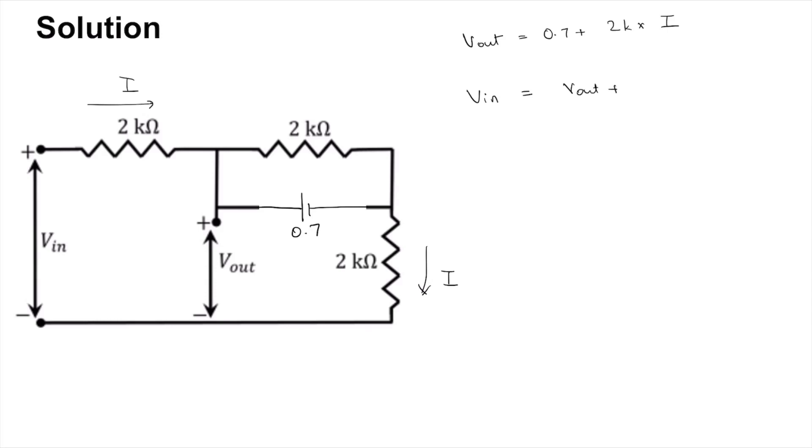And I is going to simply be Vout minus 0.7 by 2k. This is just from this equation. So Vin is now going to be Vout plus 2k times...